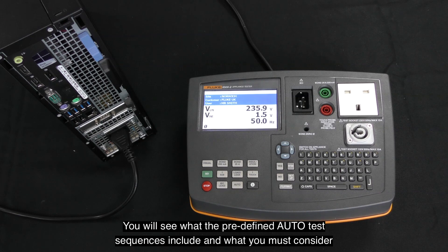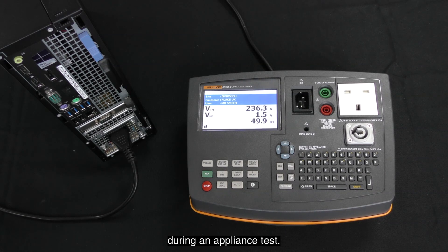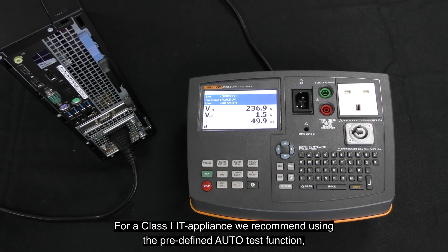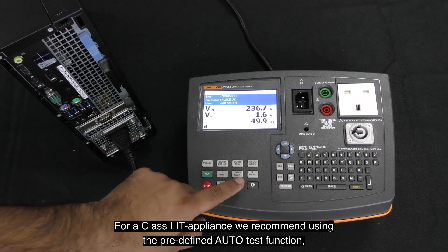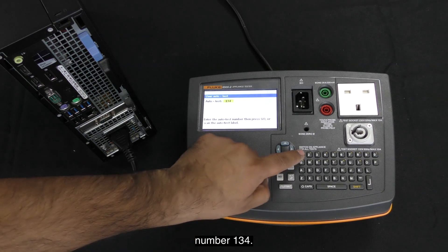You will see what the predefined auto test sequences include and what you must consider during an appliance test. For a Class 1 IT appliance, we recommend using the predefined auto test function number 134.